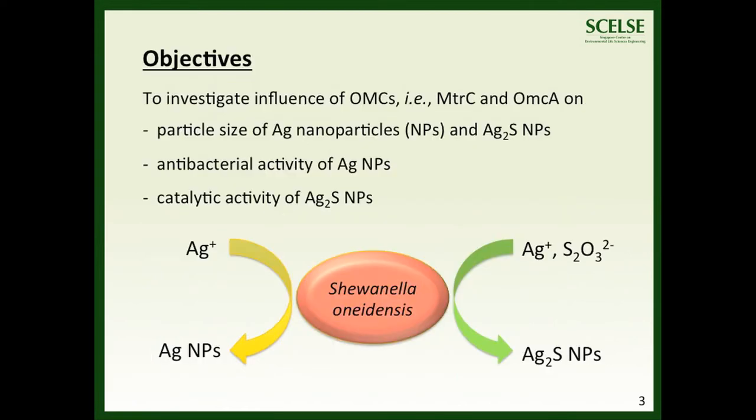In our study, we used Shewanella oneidensis MR1 as a model system to investigate the influence of Outer Membrane C-Type Cytochromes MtrC and OmcA on the size and activities of extracellular silver and silver sulphide nanoparticles.